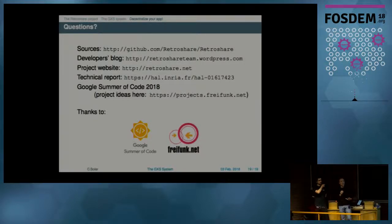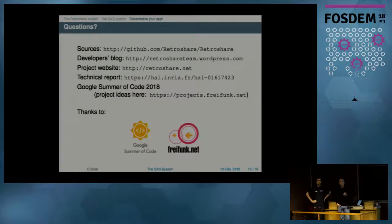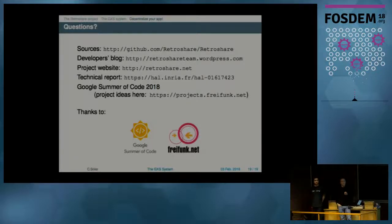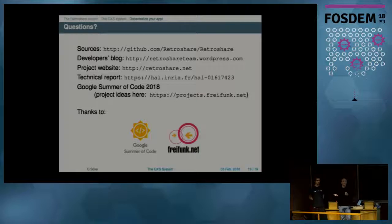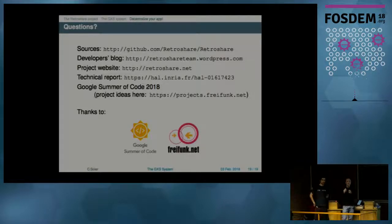Q: Have you considered exposing IMAP or NNTP protocols so users can use existing mail and forum clients, given that much of the code is UI? A: You would then need to connect to the clearnet, which we don't do. There were some experiments implementing a gateway to forward email into the RetroShare email system, but it's a prototype and not in the main application.